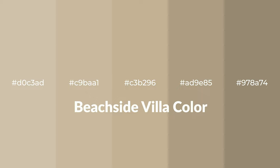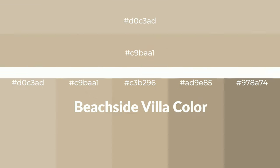Warm shades of Beachside Villa color with brown hue for your next project. To generate tints of a color, we add white to the color. Tints create light and exquisite emotions. To generate shades of a color, we add black to the color, and it is used in patterns, 3D effects, and layers. Shades create depth and drama.